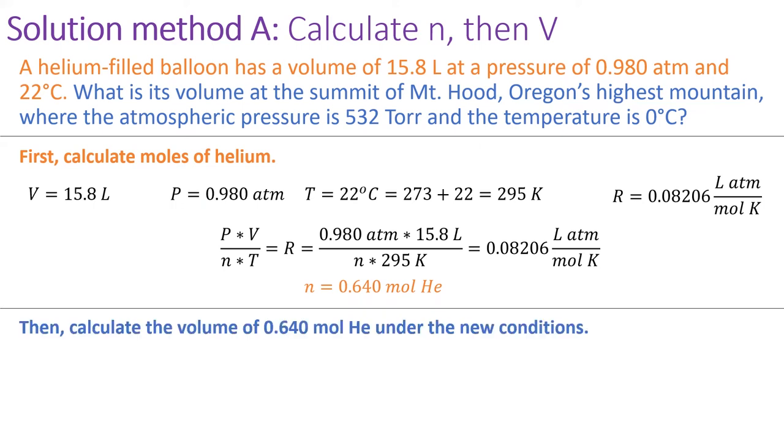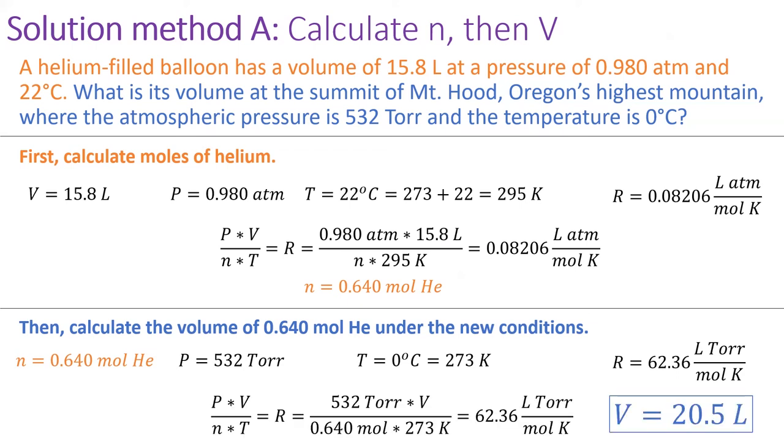The next step is to take this amount of helium to the top of Mount Hood. Put on your hiking boots and pull the new values from the part in blue. Did you notice that the units of pressure changed in this problem? Well, this just means we have to change the value of R to have the appropriate units.